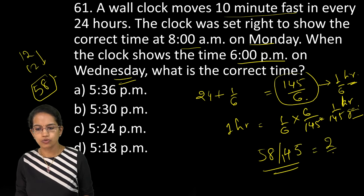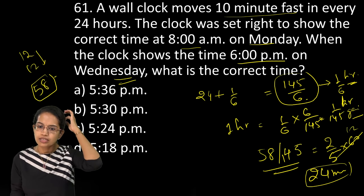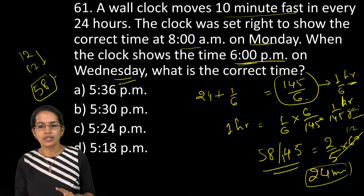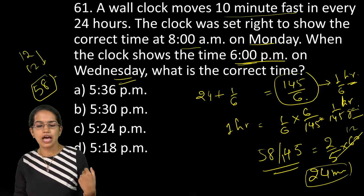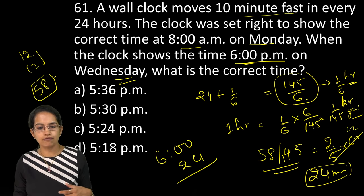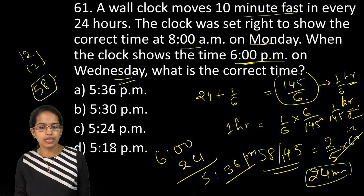58 divided by 145. And that is, you solve this, you get it as 2/5. That is 24 minutes. If I multiply it by 60 that is 12. So you have 24 minutes that it has gained. Since the time is 6pm and it is a gain, so I would have to deduct 24 from it. And therefore it would be 5pm and 36 minutes. So 5 hours and 36 minutes pm would be my right answer.